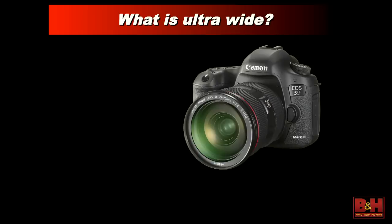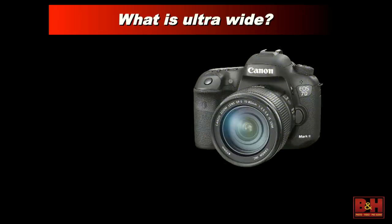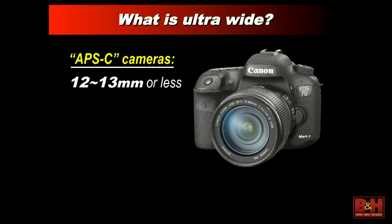Just to clarify: when we talk about an ultra-wide-angle lens on full frame digital cameras or traditional film cameras, we're talking a lens that's usually 20 millimeters or lower in focal length. That correlates with our small chip cameras — like a 7D — to about 12 to 13 millimeters or lower. We need about 12 millimeters or less on those cameras to get that ultra-wide look.